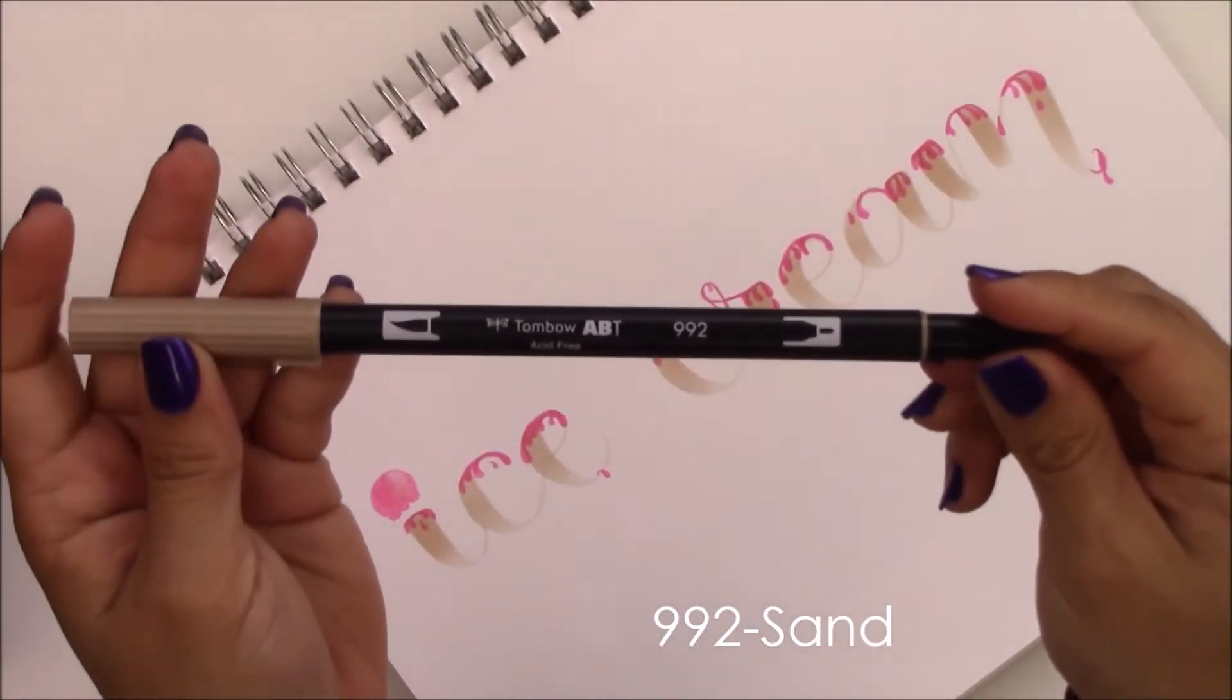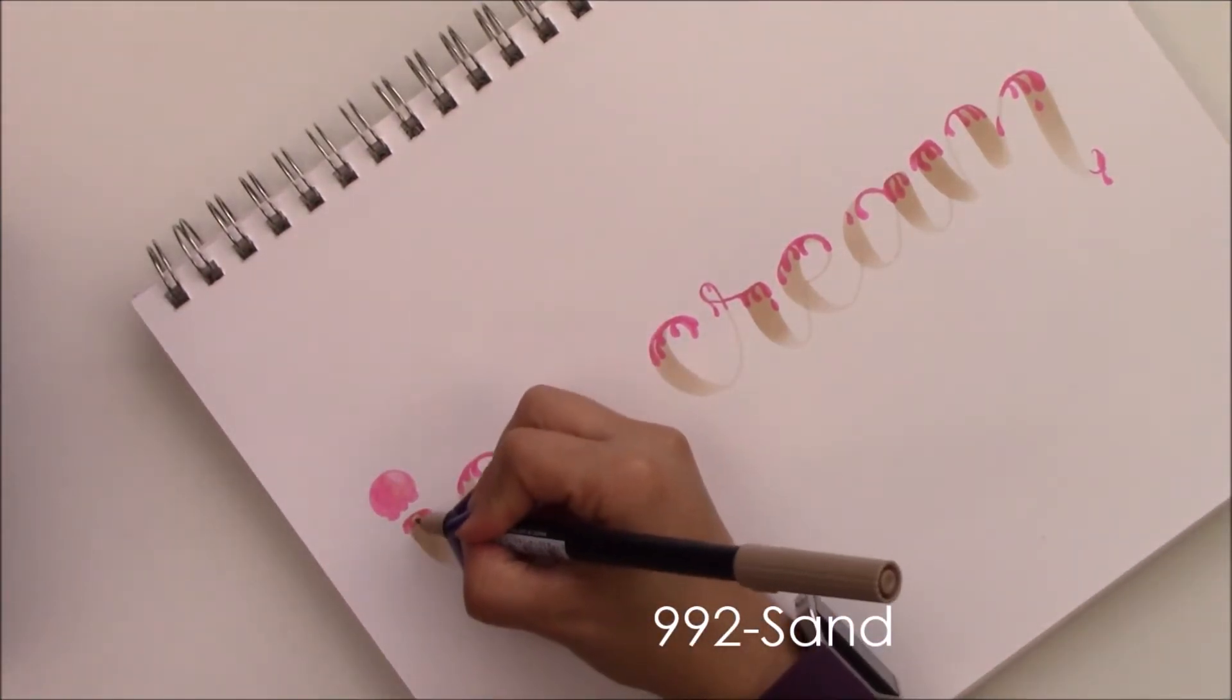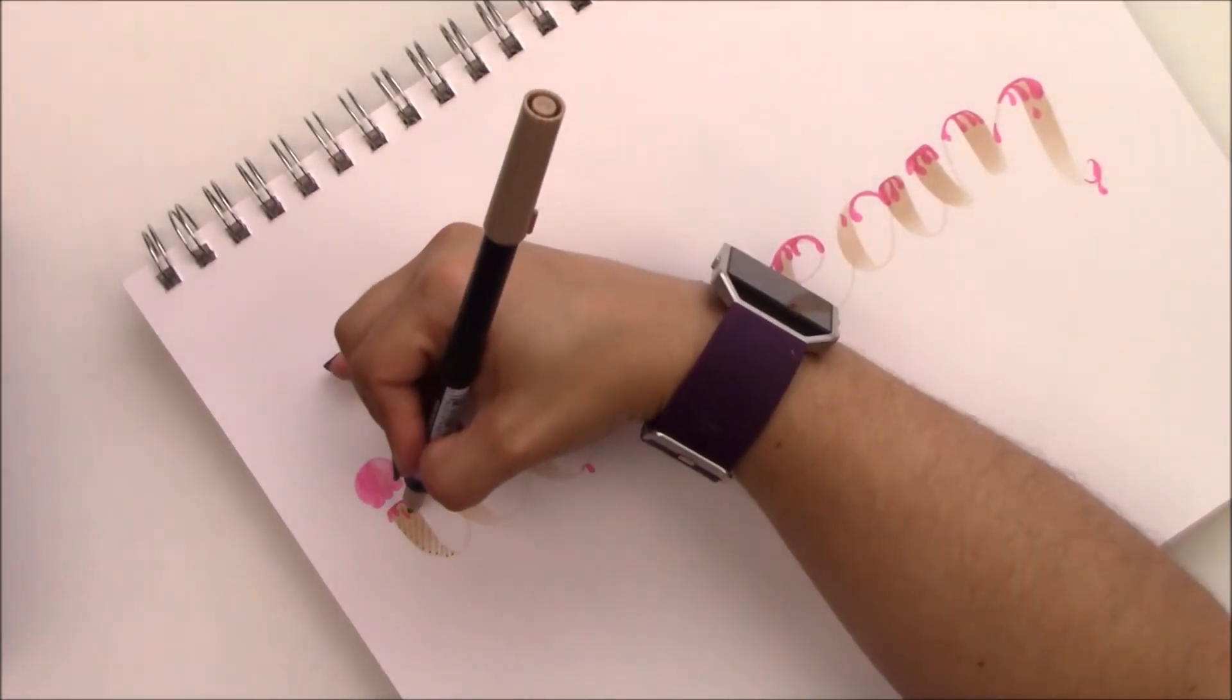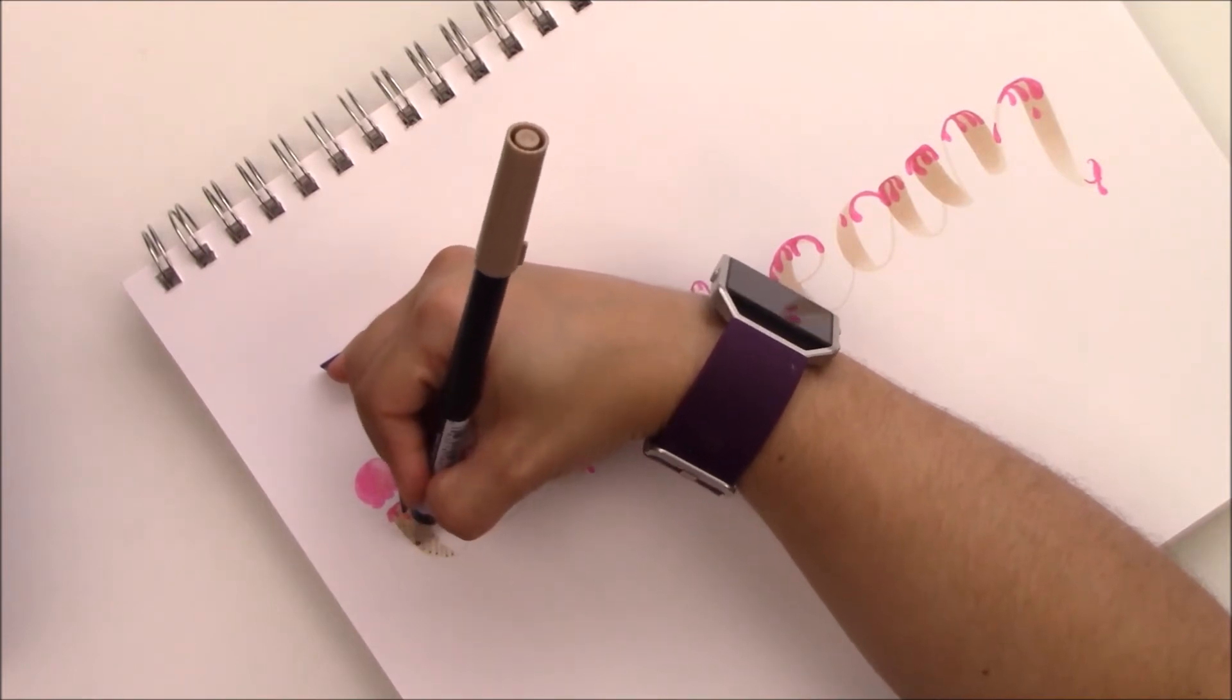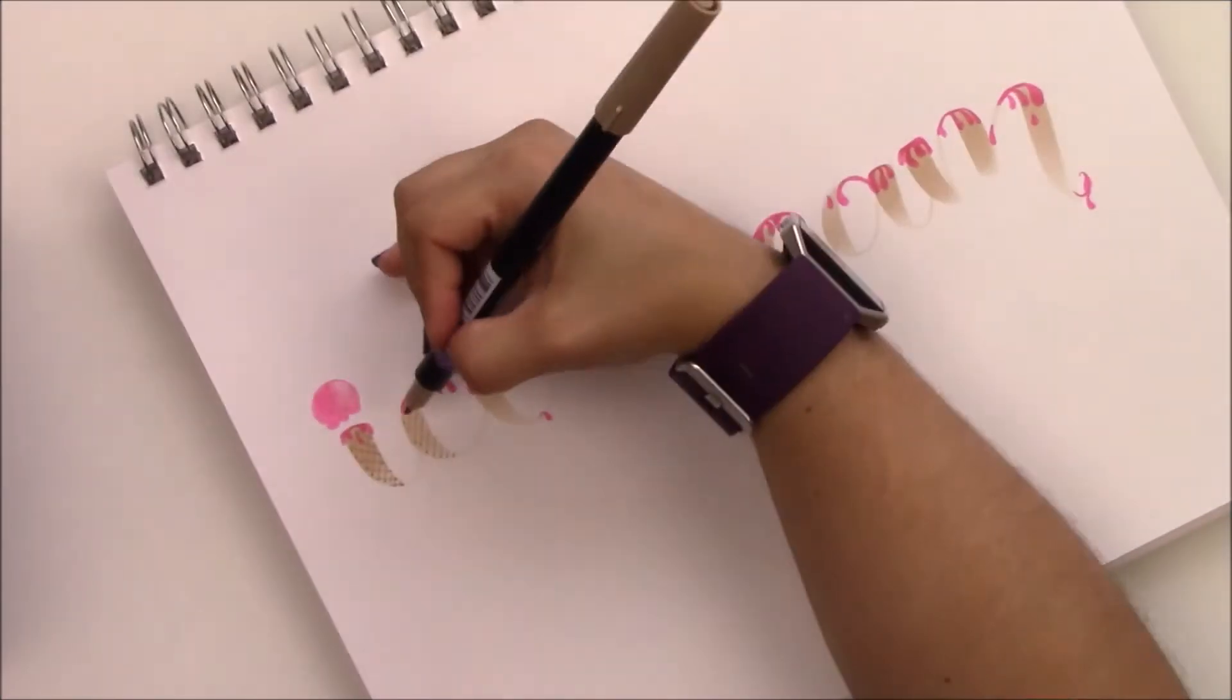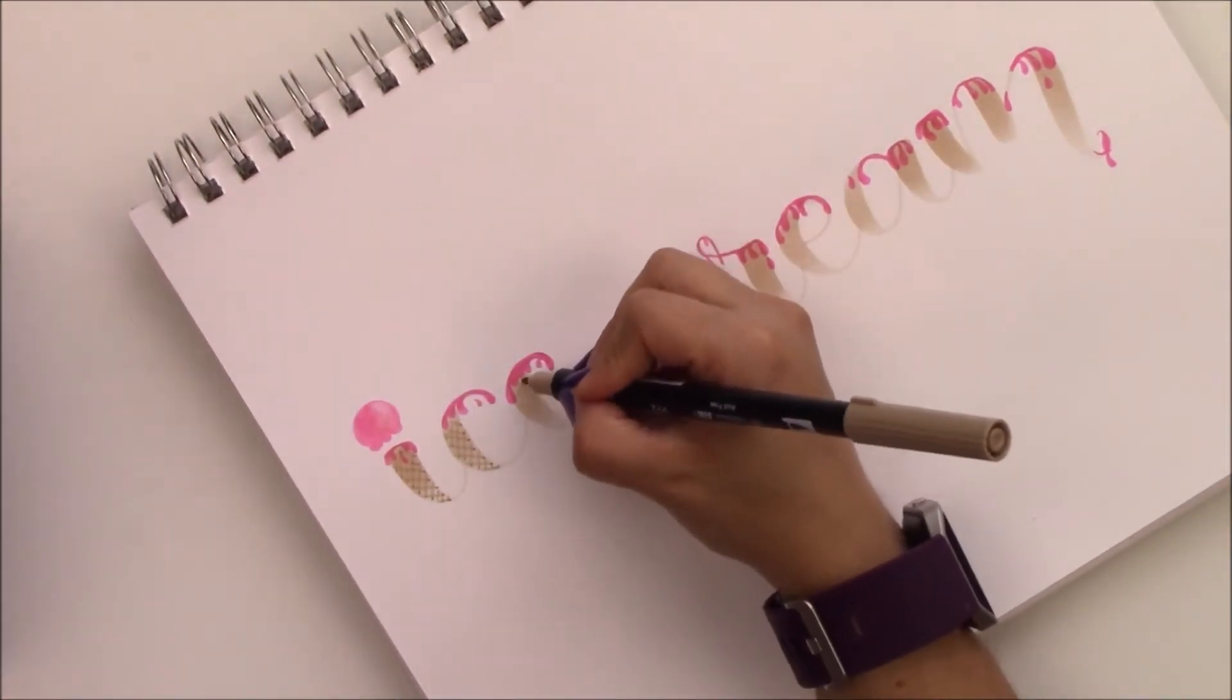Now I'm going to use the fine tip of the 992 sand dual brush pen and draw diagonal lines. I'm going to go both sides to mimic the image of the ice cream cone. You don't have to get to the border, just stay inside the lines. It looks like the cookie waffle you can get in your favorite ice cream parlor.